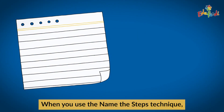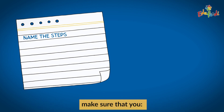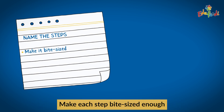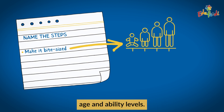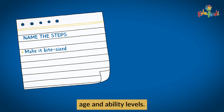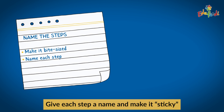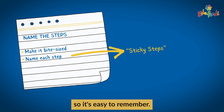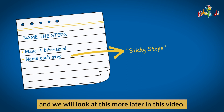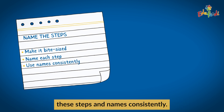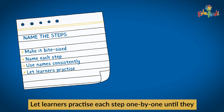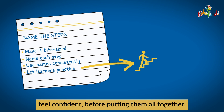When you use the Name the Steps technique, make sure that you make each step bite-sized enough to suit your learners' age and ability levels. Give each step a name and make it sticky so it's easy to remember — we call this sticky steps and we will look at this more later in the video. Remember to use these steps and names consistently, and let learners practice each step one by one until they feel confident before putting them all together.